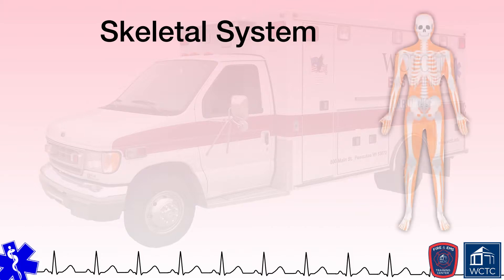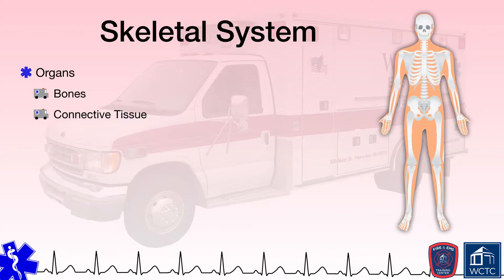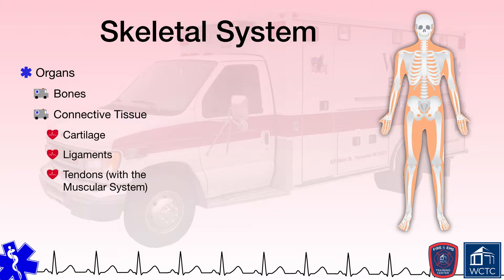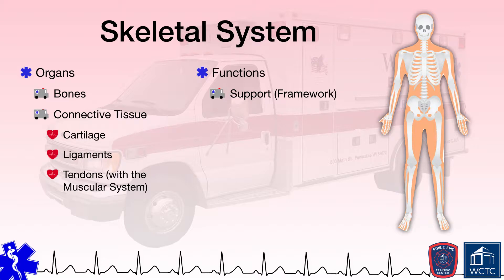The skeletal system of an adult consists of 206 bones and other connective tissues such as cartilage, ligaments, and tendons that serve several important functions within the body. First of all, the skeletal system provides a framework and structural support for the body. Without bones, our bodies would be just lumps of tissue.